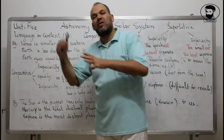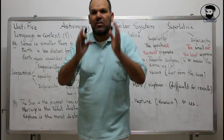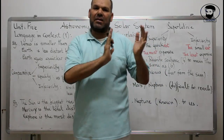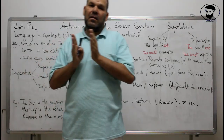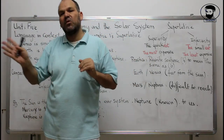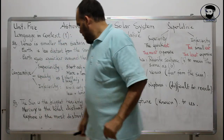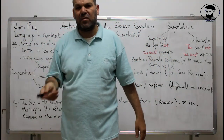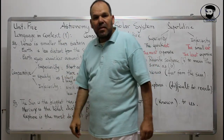We use the superlative here because we are comparing the Sun with all the heavenly bodies in our system — so 'the Sun is the biggest.' Mercury is the least distant planet because it is nearest to the Sun. Neptune is the most distant planet because it is millions of kilometers from the Sun. Pluto is not considered a planet; astronomers are still exploring what lies beyond Neptune.